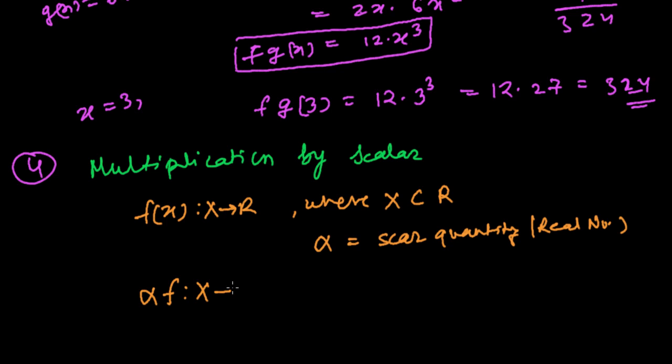The product will also be a new function defined from X to R. That can be defined as alpha times f. Alpha f(x) equals alpha times f(x).